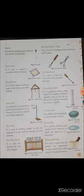Now the use of wire gauge. Wire gauge is used to support a container while it is heating. And the tripod stand. It is a three-legged stand that supports the wire gauge while heating. You can see the tripod stand. It is three-legged. And just above it we put the wire gauge. So that when we are heating any beaker or conical flask, we put the wire gauge over it. And then we heat so that they cannot be tilted.